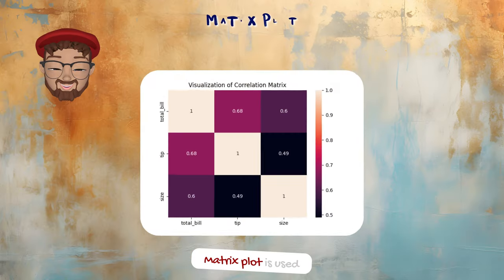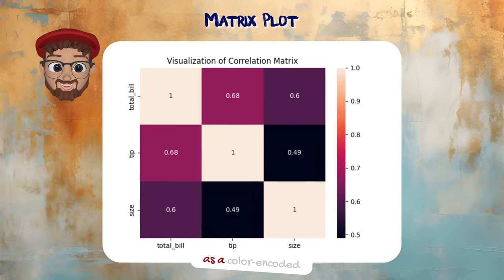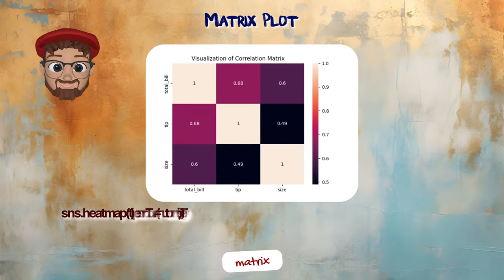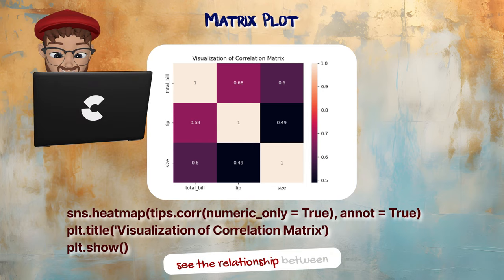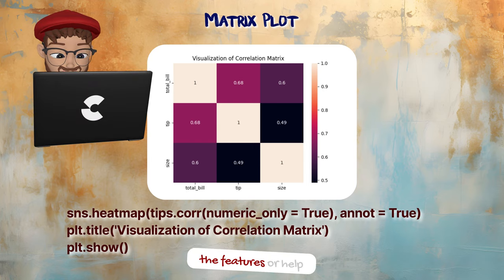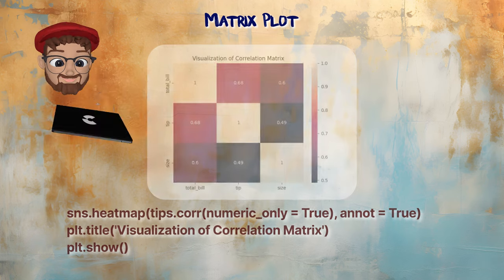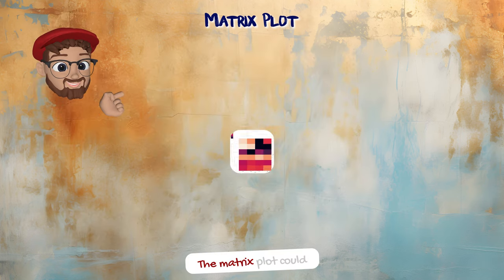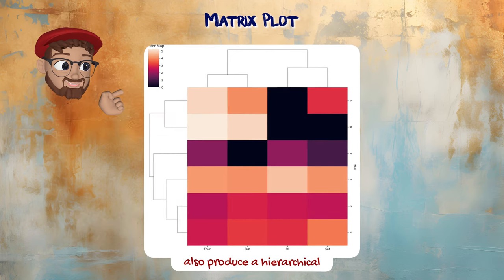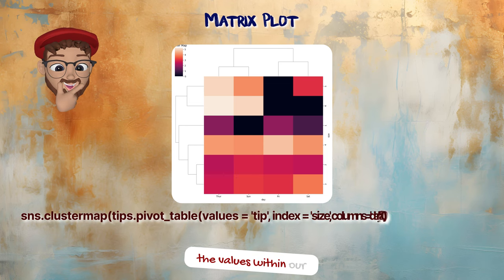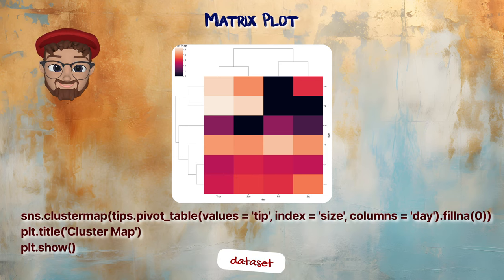Matrix plot is used to visualize the data as a color-encoded matrix. It is used to see the relationship between features or help recognize clusters within data. The matrix plot can also produce a hierarchical clustering plot that infers the values within our dataset and clusters them according to existing similarity.